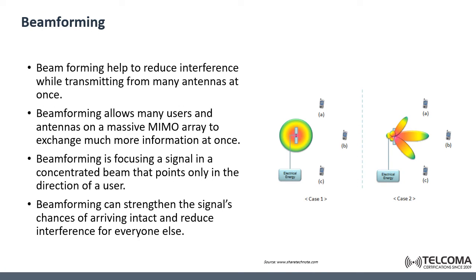To understand the concept of beamforming, let's look at the figure on this slide. There are two antenna system cases, both transmitting exactly the same total energy. In case one, on the left, the antenna system radiates the same energy in all directions, so the three user equipments receive almost the same amount of energy. However, a large portion of the energy is not directed to the user equipment and is therefore wasted.